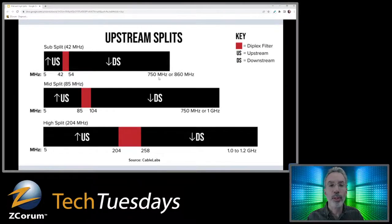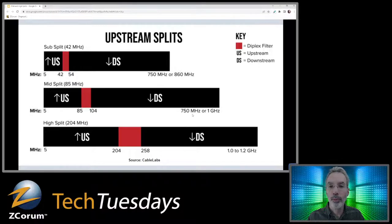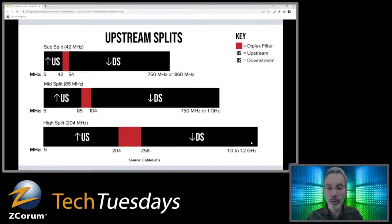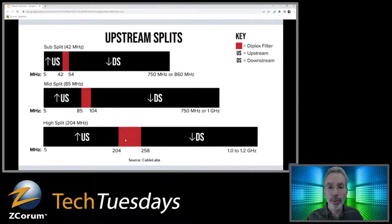There's a good slide here — I got this image from CableLabs. You can see the sub split: 5 to 42 MHz is your diplex filter crossover zone, then 54 MHz on up for downstream. For the mid split: 5 to 85 MHz upstream, then 104 MHz up to 750 MHz or up to a gig downstream. For the high split: 5 to 204 MHz upstream, diplex filter crossover, then 258 MHz up to 1 or 1.2 GHz downstream. As you increase bandwidth, you've got to increase the crossover area for the diplex filters — that area is blocked out to separate downstream and upstream.